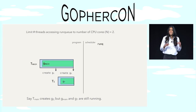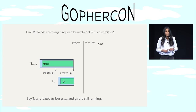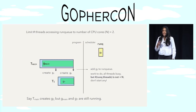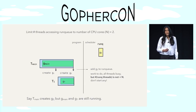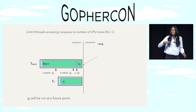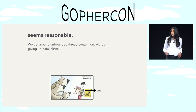Our limit is the number of CPU cores, which is two. We've skipped to the interesting point — we have two goroutine-running threads already, and G main is going to create another goroutine. We add G2 to the run queue and do our checks, but this time there's an extra check: we already have two goroutine-running threads, so we're not going to create another. What happens to G2? Don't worry — at a future scheduling point, like when G1 blocks on the channel, G2 will be scheduled. This seems like a reasonable scheme — we've gotten around our unbounded threads problem without giving up on parallelism.